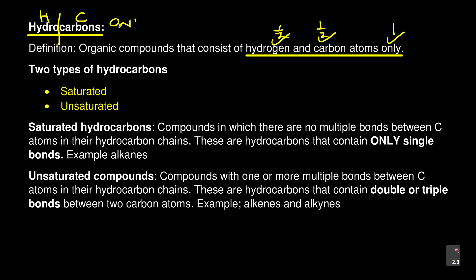Don't forget the word 'only', because there are some compounds that consist of hydrogen and carbon and other atoms. But if you say 'only', you are saying you don't expect anything except hydrogen and carbon. Now in these hydrocarbons, there are two types: saturated and unsaturated. They will ask you to state two types of hydrocarbons — you must say saturated hydrocarbons and unsaturated hydrocarbons.